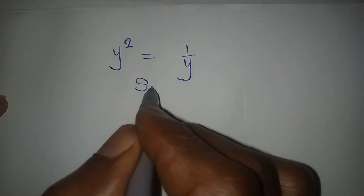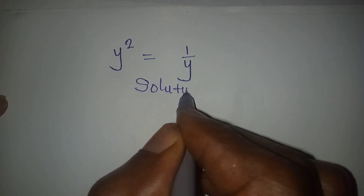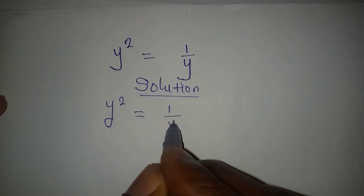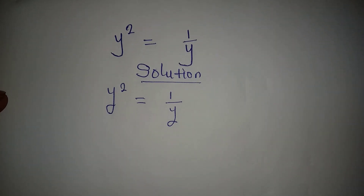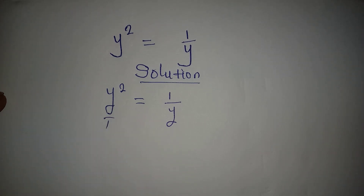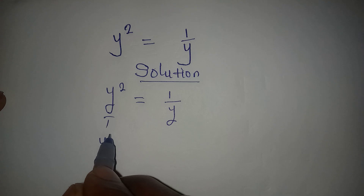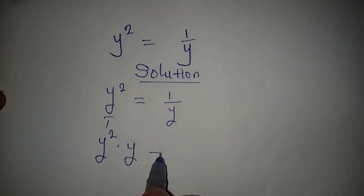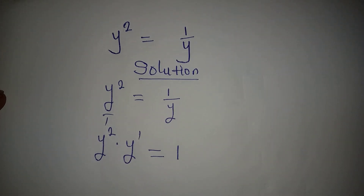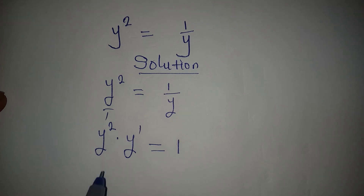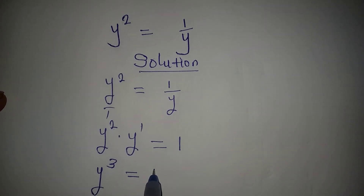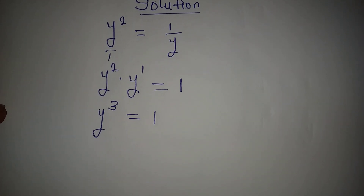Let us solve this problem completely. We have y squared equal to 1 over y. This is very simple — we know what to do. We can write 1 over y as 1 over y, then cross multiply so that y squared multiplies y, which will be equal to 1 times 1. That gives us 1. Note that 1 is also to the power of 1 — although we don't normally write this. Now, pick one of the bases and we have 2 plus 1, which is 3, equal to 1.